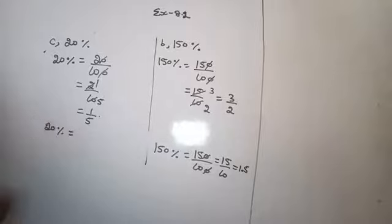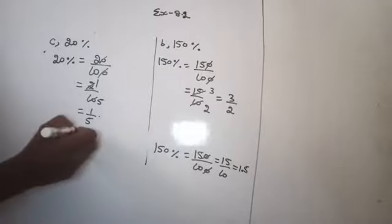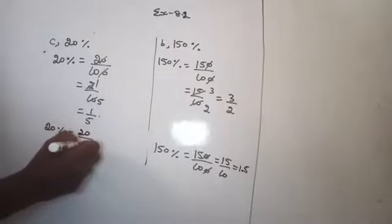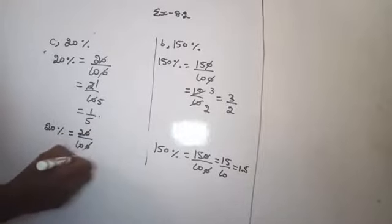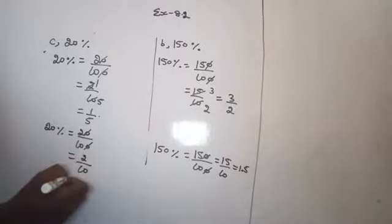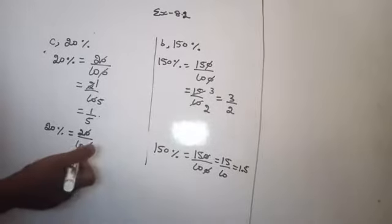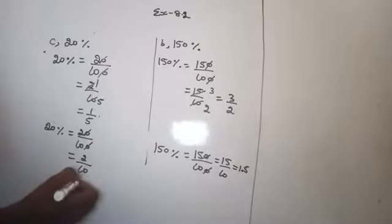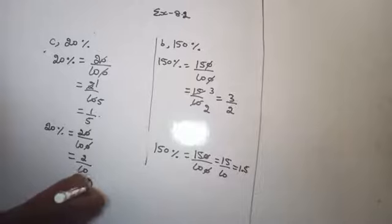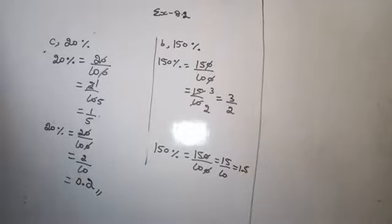Now express into decimal. 20% equals 20/100. Strike out the equal number of zeros to get 2/10. Shift 1 digit from the numerator — that gives 0.2.